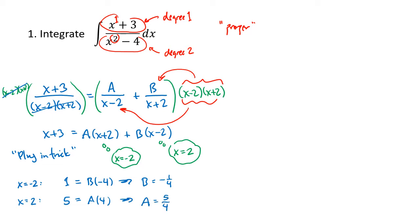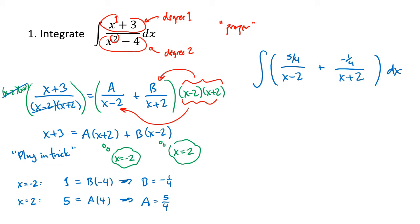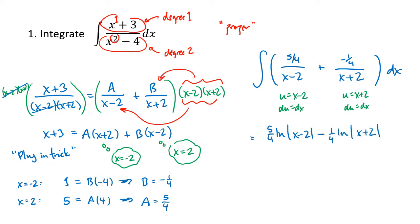After all of this, our integral can be rewritten as 5/4 divided by x minus 2, plus negative 1/4 divided by x plus 2. These are simple substitution problems: u equals x minus 2 with du equals dx, and u equals x plus 2 with du equals dx. So these give us 5/4 times the natural log of the absolute value of x minus 2, minus 1/4 times the natural log of x plus 2. And that's our answer.